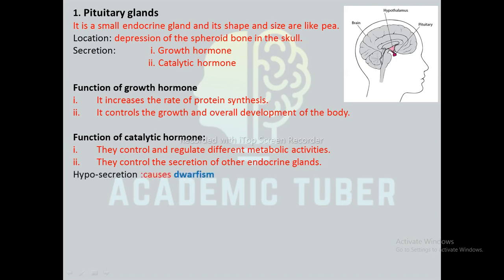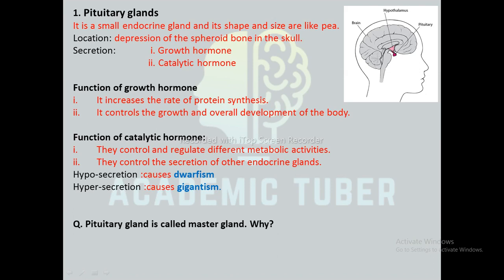Hyposecretion, meaning under-secretion of the pituitary gland, causes dwarfism. Hypersecretion, meaning over-secretion, causes gigantism. The pituitary gland is called the master gland because it controls the secretion and activities of all other ductless glands.